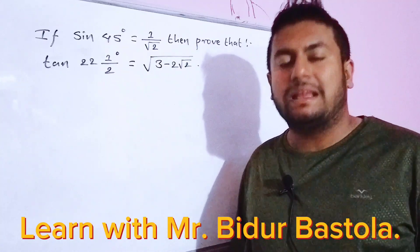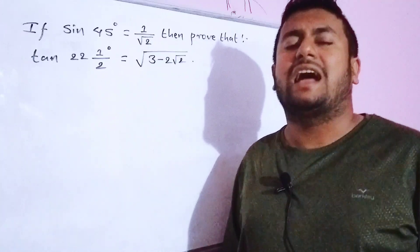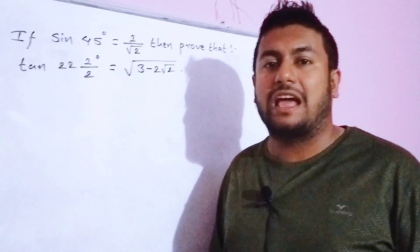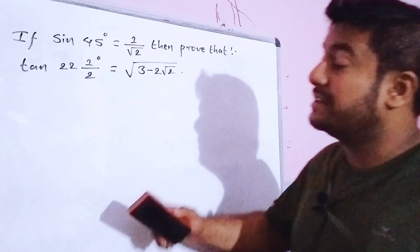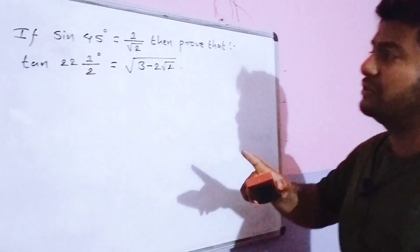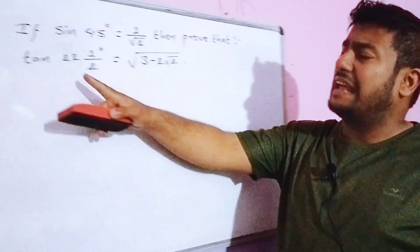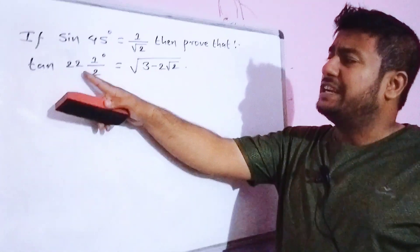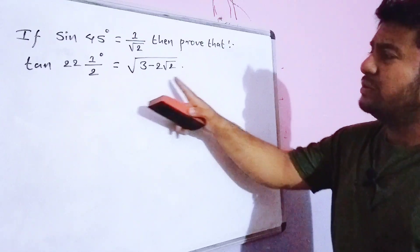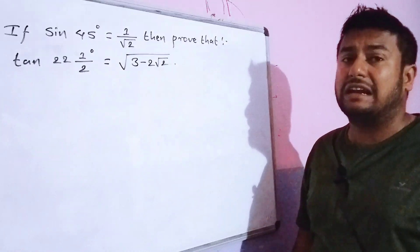Hello everyone, welcome to my YouTube channel. Today I am going to take a trigonometric question. The question is for you: if sin 45 degree is equal to 1 by root under 2, then prove that tan 22 and 1/2 degree is equal to root under 3 minus 2 root under 2.